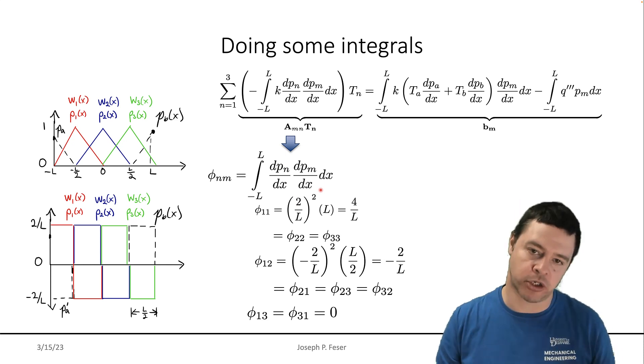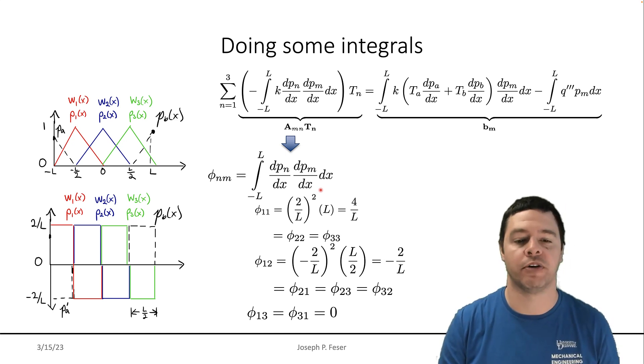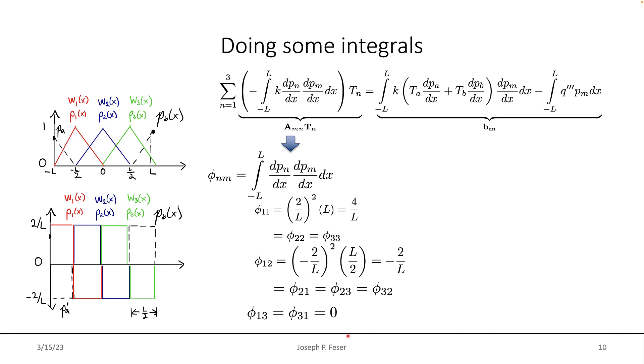And actually, if you have a much larger system with a lot of tent functions, most of the tent functions would have no overlap. And most of the values turn out to be zero. So for that reason, the finite element method usually leads to sparse matrices.